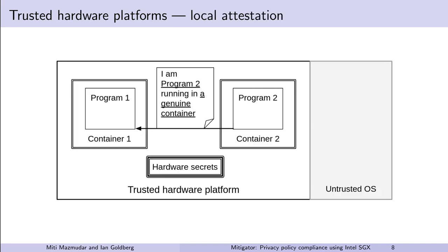Local attestation is an important feature that we use in our design. Here we have Program 1 and Program 2 being run in different containers. We wish Program 2 to certify to Program 1 that it is running in a genuine container. Program 2 produces an attestation report that includes signatures over the signer and enclave measurements and is specifically generated for Enclave 1. Note that other enclaves or enclaves on other machines cannot verify this report. The attestation report also includes an ephemeral public key for Program 2. Program 1 then verifies this report. Local attestation involves a two-way exchange of attestation reports and keys and results in a hardware-based secure channel between the enclaves.